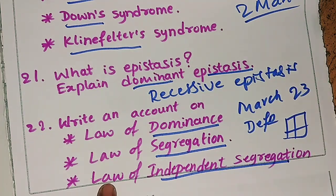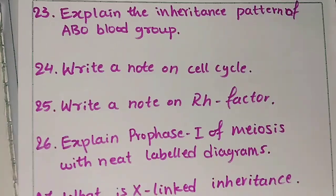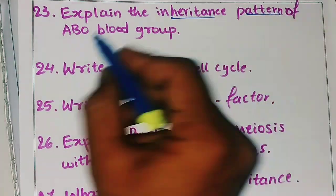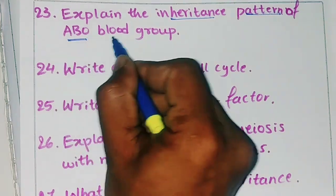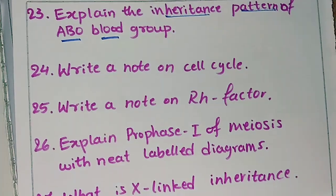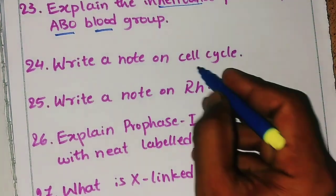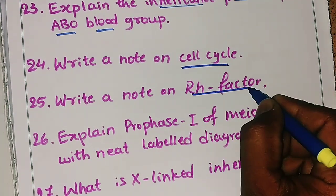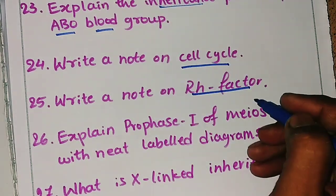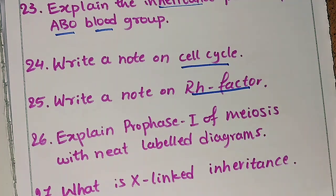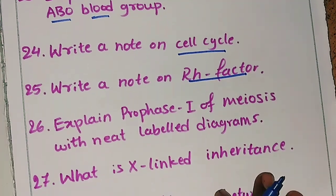The twenty-third question is: explain the inheritance pattern of ABO blood group. The twenty-fourth question is: write a note on the cell cycle. The twenty-fifth question is: write a note on the Rh factor, which is also related to blood groups — so make your understanding of blood group-related topics complete.